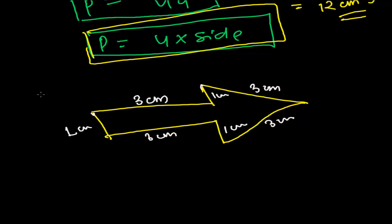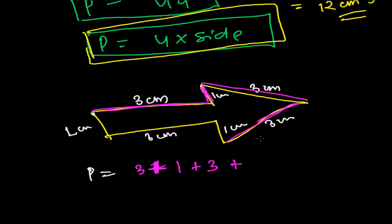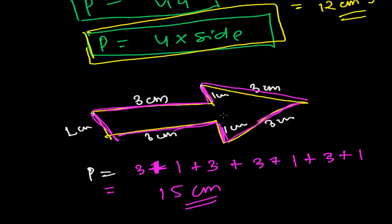Generally we find the perimeter in 2 dimensions — in a plane, like your computer screen, book, or table surface. So let's add all the sides: 3 plus 1 plus 3 plus 3 plus 1 plus 3 plus 1. That is 3 plus 1 is 4, plus 3 is 7, plus 3 is 10, plus 1 is 11, plus 3 is 14, plus 1 is 15. So the perimeter of this closed figure is 15 centimeters. Just add all the lengths of the boundaries — that is your perimeter.